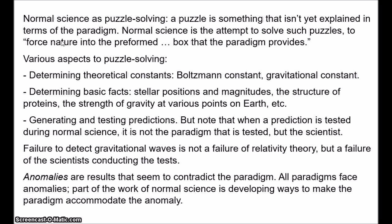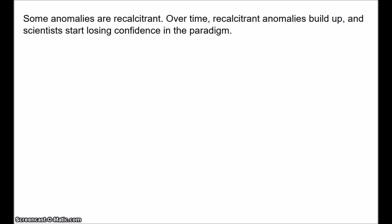So that's normal science. Now, the work of normal science can't continue forever — normal science is structured so that it eventually gives way to crisis and revolution. One part of normal science is resolving anomalies; however, some anomalies are recalcitrant. Attempts to resolve them, even by the brightest minds of the field, continually fail. Initially, a recalcitrant anomaly may simply be ignored, but over time these recalcitrant anomalies start to build up, and this leads scientists to start losing confidence in their paradigm.